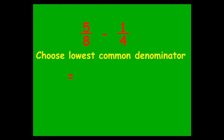Five eighths minus a quarter — choosing the lowest common denominator, the smallest number into which four and eight both go is eight. If you chose thirty-two you'd get to the right answer, but with extra work. Five eighths is already over eight, so leave it as it is. Double top and bottom of one quarter to get two eighths. Final answer: five eighths minus two eighths is three eighths.